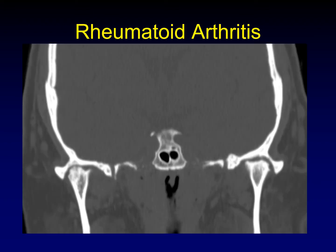Here's what rheumatoid arthritis looks like in the TMJ. Notice that there are erosions and irregularity not just along the condylar head, but corresponding to that along the undersurface of the glenoid — that's a sign of late stage disease. Of course, in this situation, the patient's history is going to be your biggest clue.